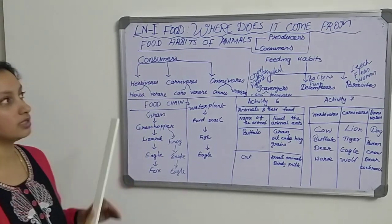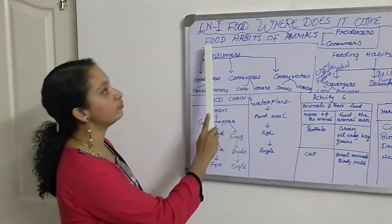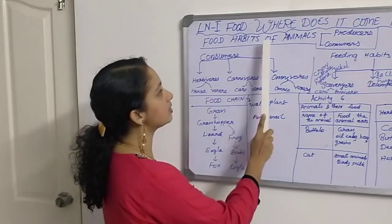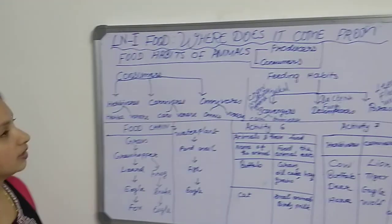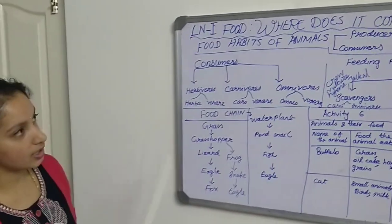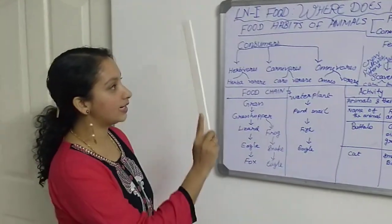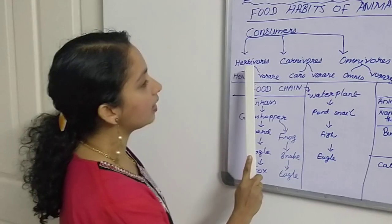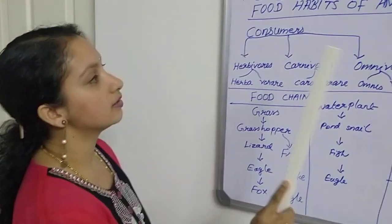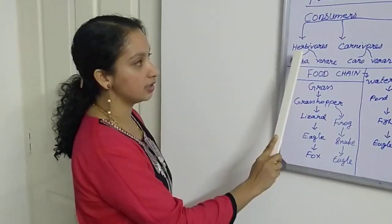Those who are dependent on producers are called consumers. So these are the two terms based on the food habits of animals. Now we will see in detail what consumers are and what classification is given here.